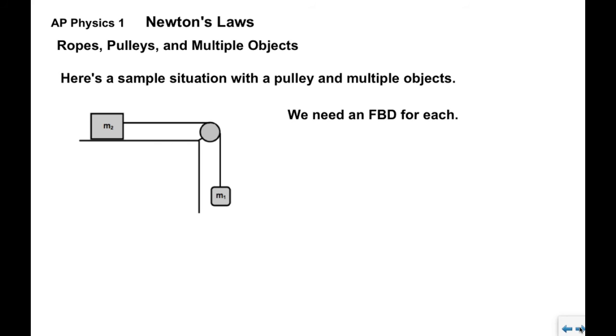So here's a typical situation that might have multiple objects in a pulley. We have M2 up here, we have M1 hanging here, and the string or rope is draped over a pulley. When we release this system from rest, M1 is going to accelerate down and M2 is going to accelerate to the right.